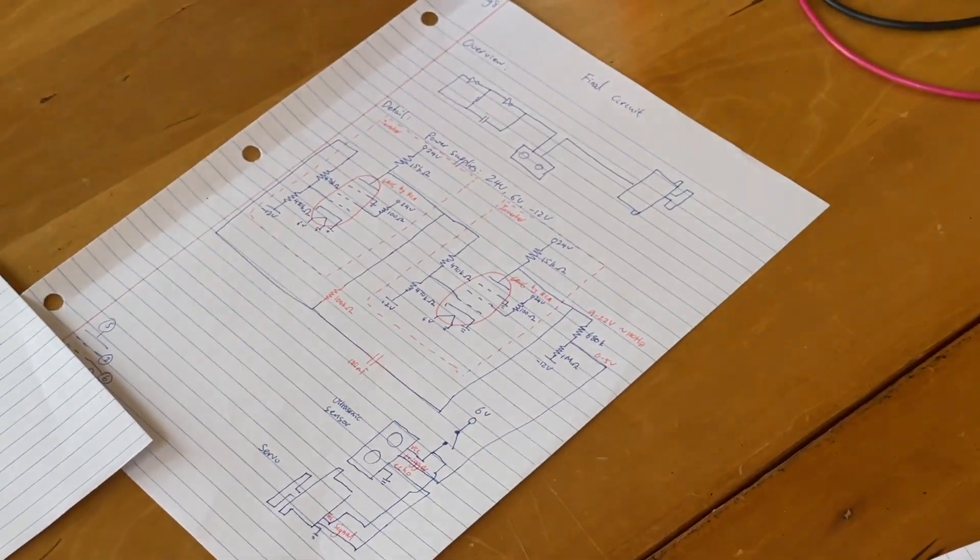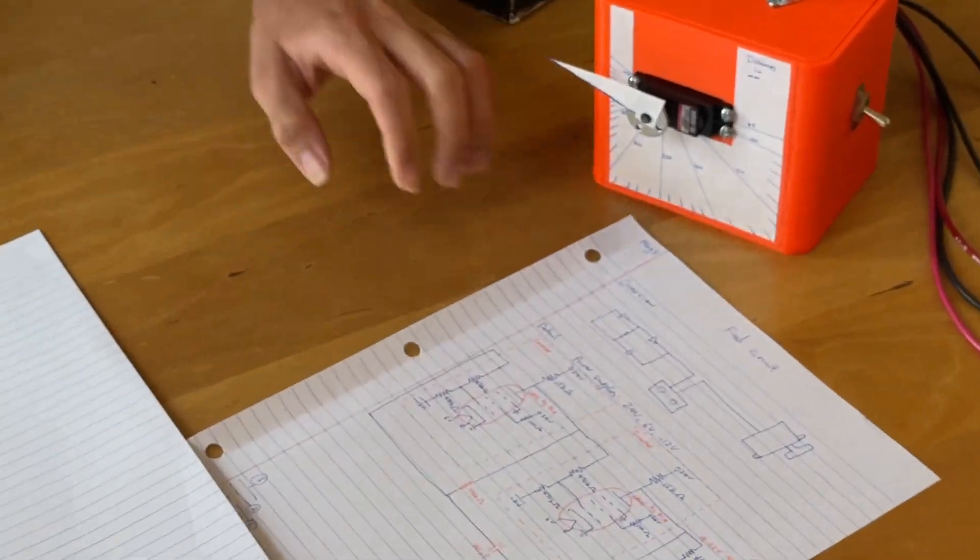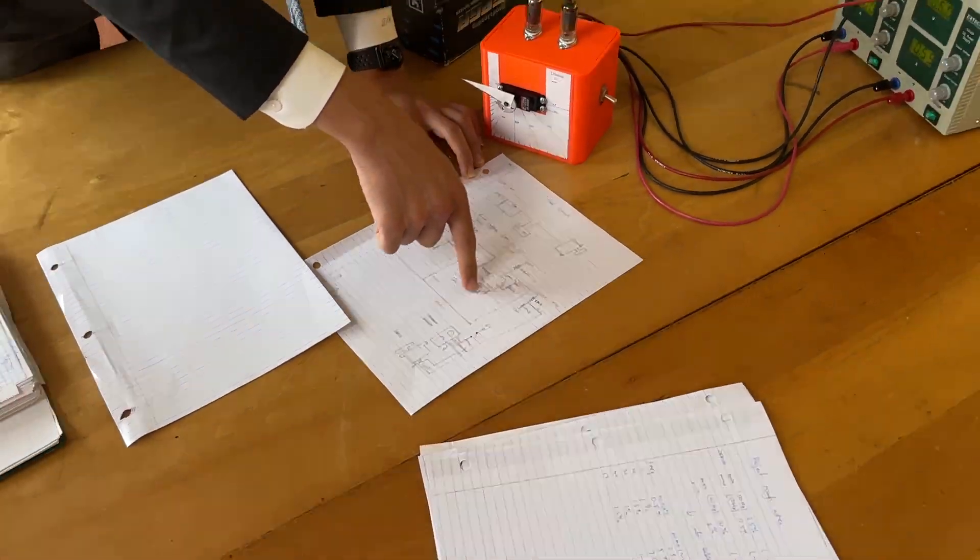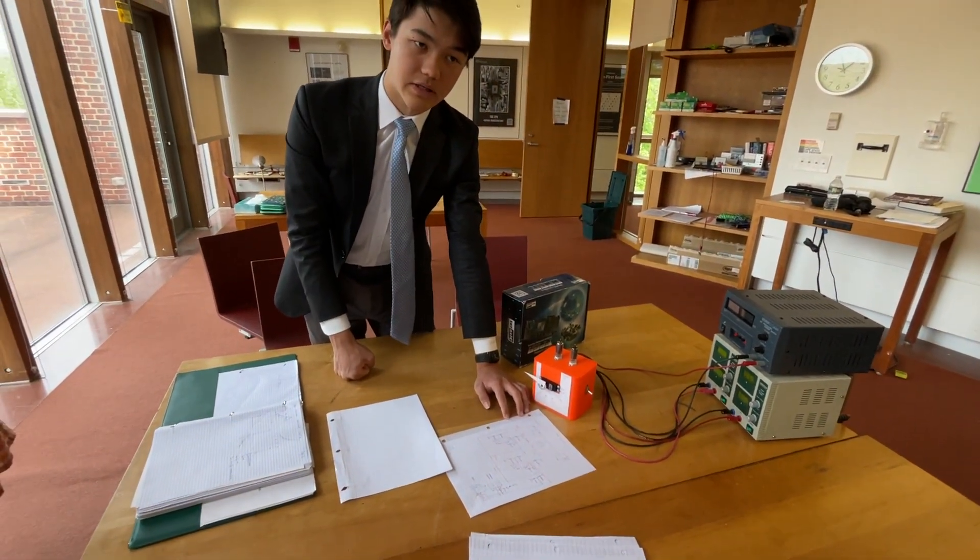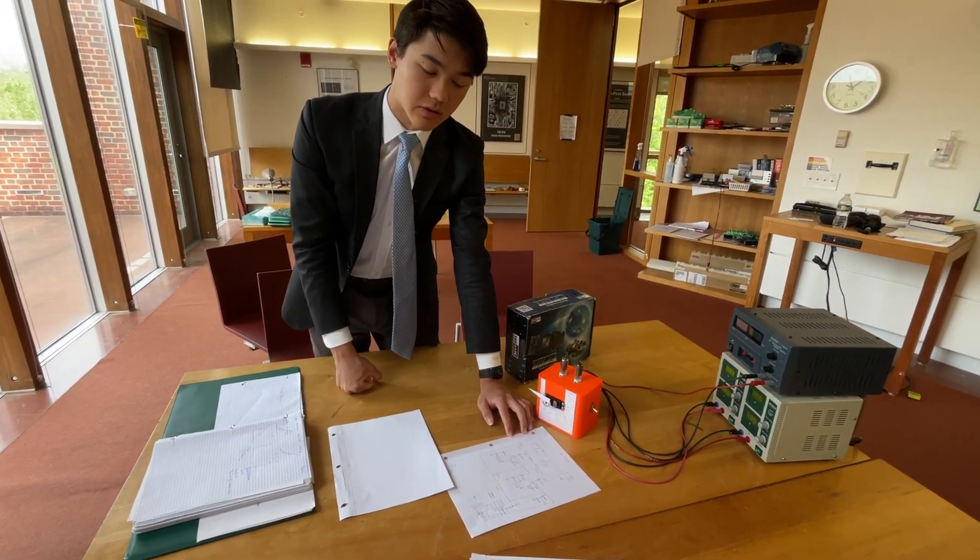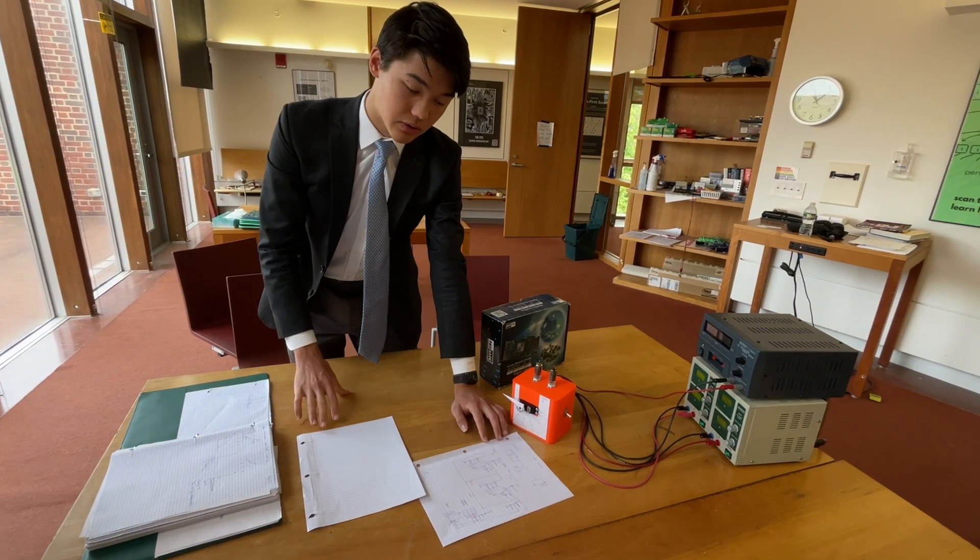And the vacuum tubes work quite similar, but the current through the vacuum tube is decided by the voltage on the grid. And it's not a very simple relationship at all, which is why you need so many resistors and different voltages around to correct everything.